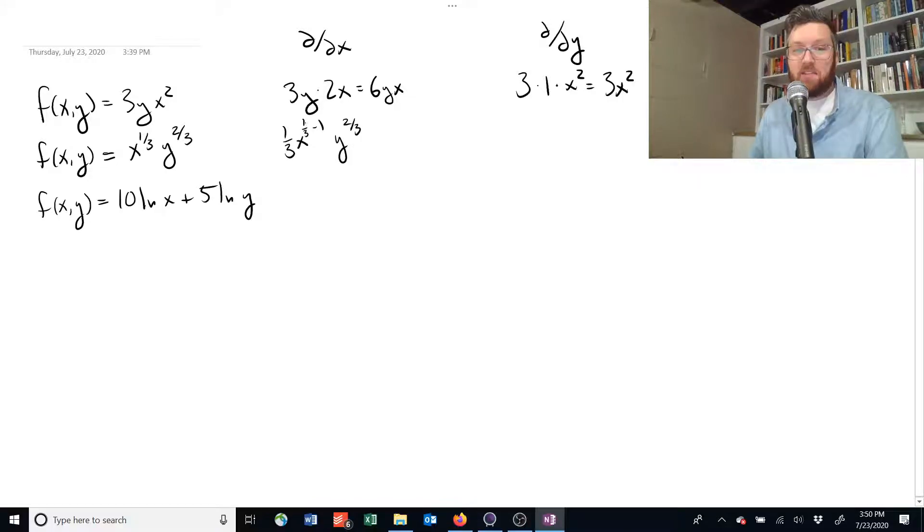So x to the one-third minus one is equal to x to the negative two-thirds times y to the positive two-thirds. Okay, and that's our partial derivative for this one.